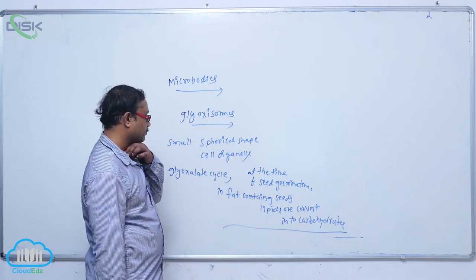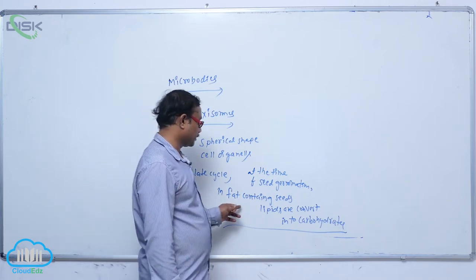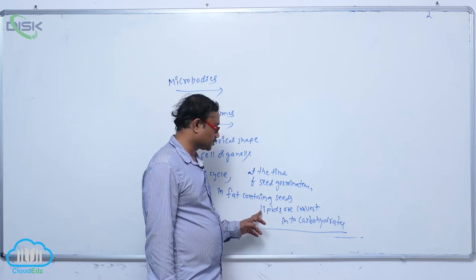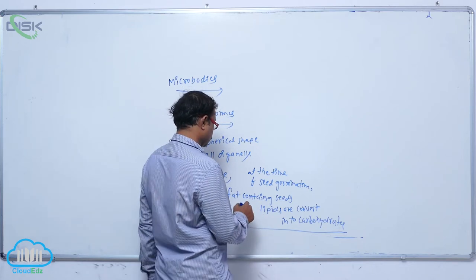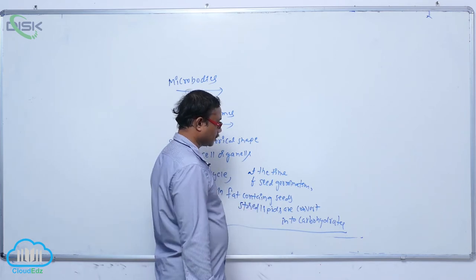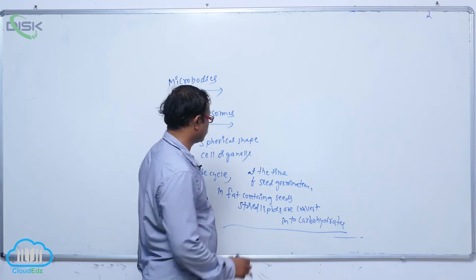At the time of seed germination, in fat-containing seeds, the stored lipids are converted into carbohydrates.